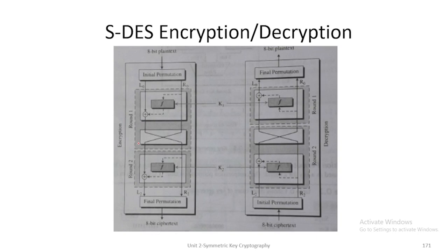The output of round 1 is L1, R1. It is L0, R0. For round 1, L1 is equal to R0. R1 equal to L0 exclusive OR of round function of R0, K1. For round 2, the input is L1, R1. The output is L2, R2. L2 is equal to L1 exclusive OR of round function of R1, K2. And R2 is equal to R1.